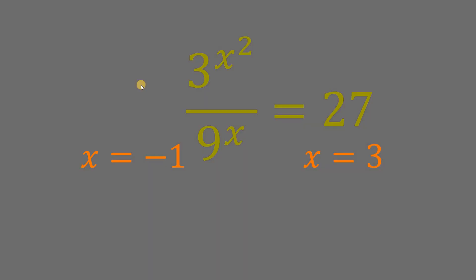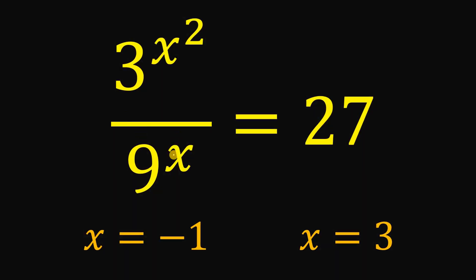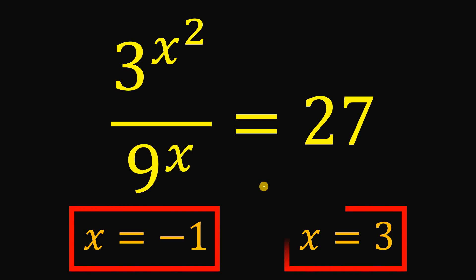Therefore, given this equation, 3 raised to the power of x squared over 9 raised to the power of x equals 27, we found two different values of x that satisfies this equation. One is x equals negative 1 and the other one is x equals 3. And, as always, we are done.